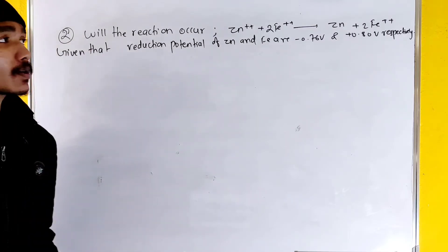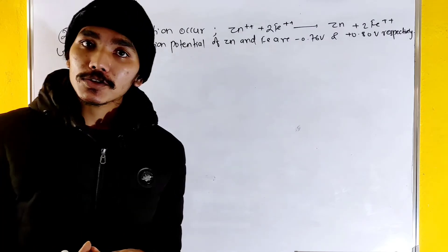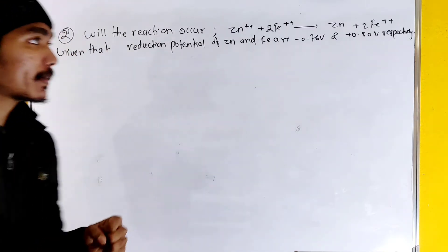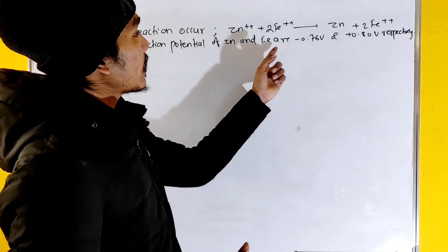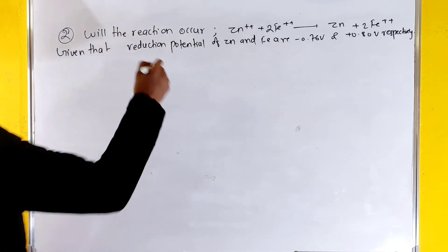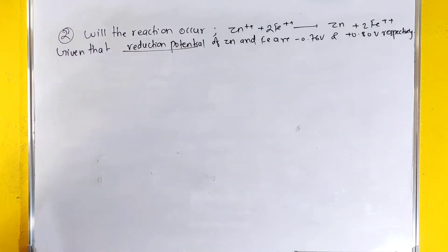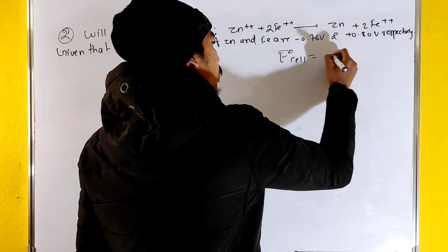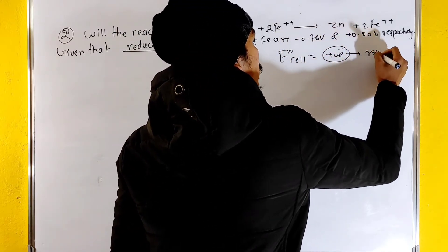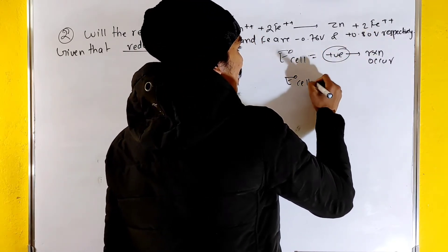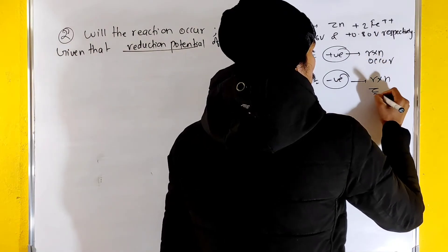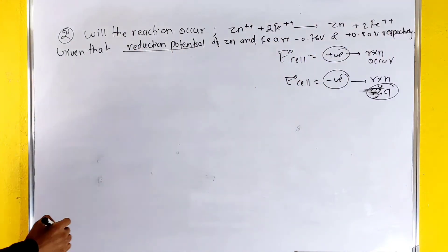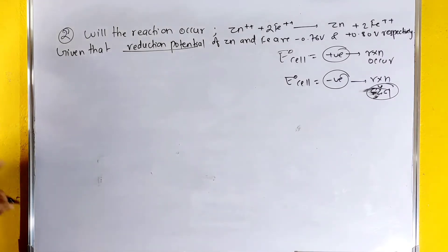Question 2: Will the reaction occur or not? We need to check whether a given reaction is feasible or not. The reduction potentials of zinc are already given. We need to determine if it is feasible: if E°cell is positive, the reaction proceeds; if E°cell is negative, the reaction does not proceed.